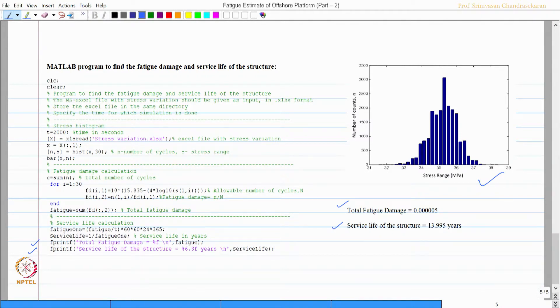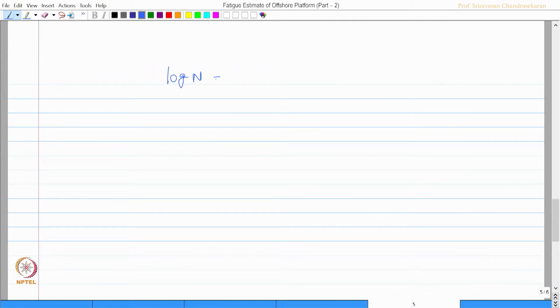This equation uses governing equation log n is log a minus m log s. Log a for this problem is given as 15.835 and m is taken as 4. This is actually as per DNV RP C203 table 23.